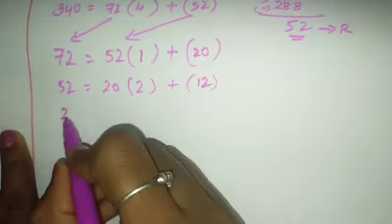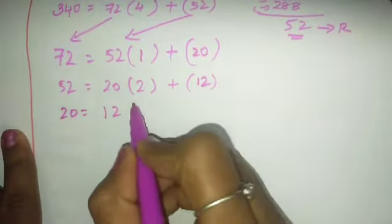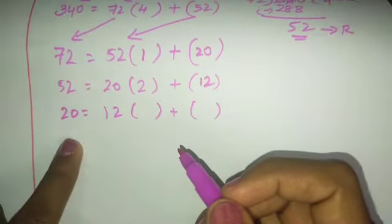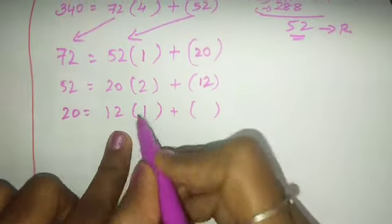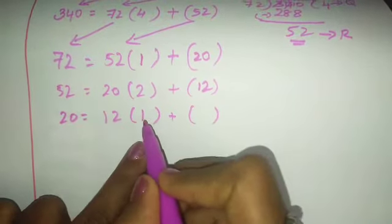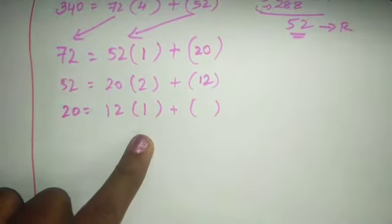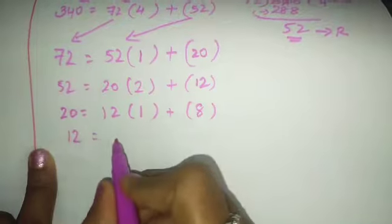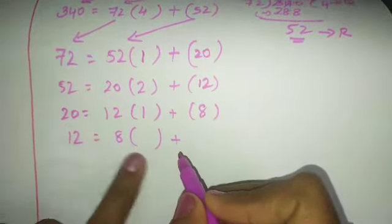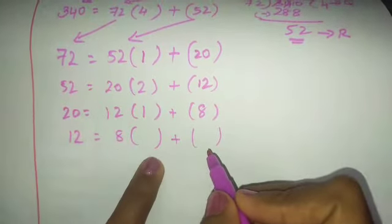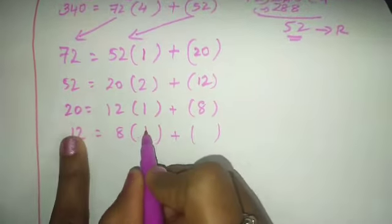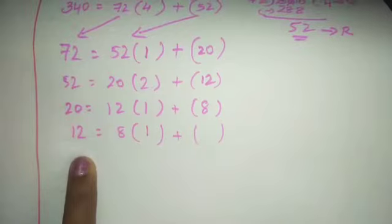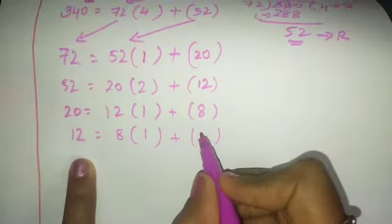Now take 20 = 12 × 1 + 8. Subtracting: 20 minus 12 is 8. Then take 12 = 8 × 1 + 4. 8 × 1 is 8, subtract from 12 to get remainder 4.